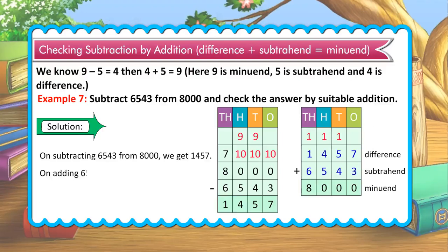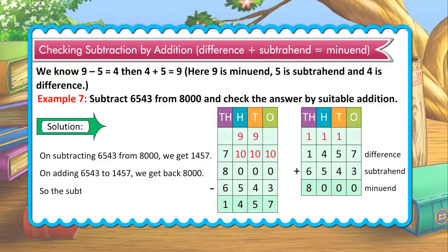On adding 6543 to 1457, we get back 8000. So the subtraction is correct.